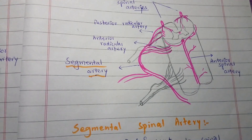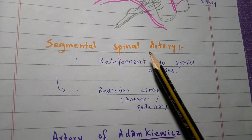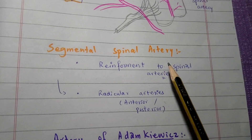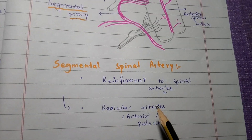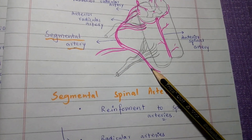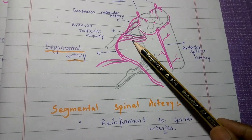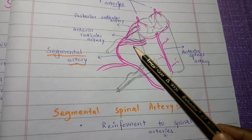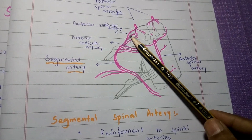In addition to these spinal arteries, there are additional arteries called segmental spinal arteries, which provide reinforcement to the anterior and posterior spinal arteries. The segmental spinal arteries originate from outside the vertebral column — such as the lumbar artery or intercostal artery — and give off anterior and posterior radicular arteries to the respective sides of the spinal cord.